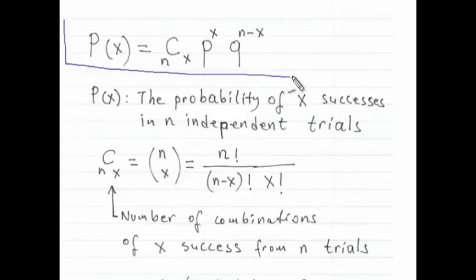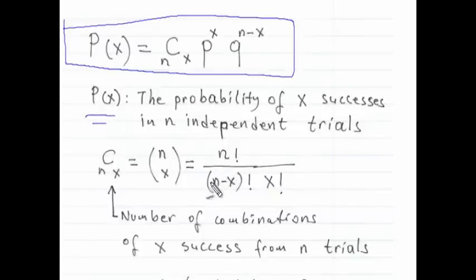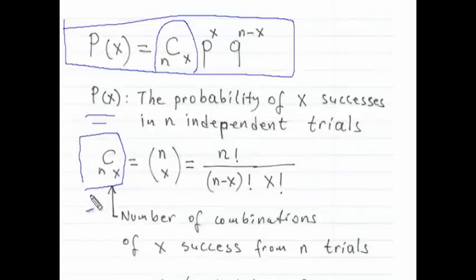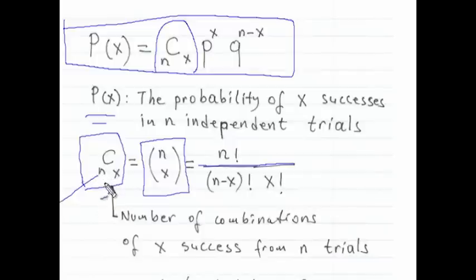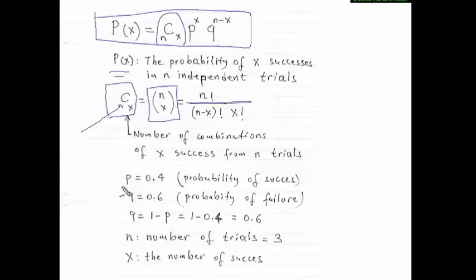This is the formula for binomial distribution. P(x) means the probability of x successes in n independent trials. This is the coefficient of the formula — basically the combination formula, n choose x. So n is the number of trials and x is the number of successes. Some statistics books write it differently but it means the same thing. If your calculator doesn't have this function, you can use the formula: n factorial over (n minus x) factorial times x factorial. This is the combination formula — the number of combinations of x successes from n trials.